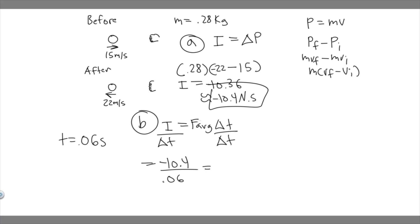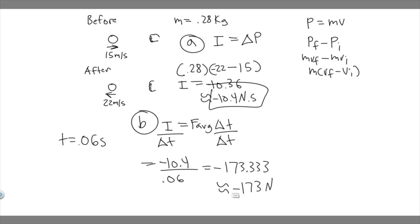Plugging in 10.4 divided by 0.06, we get −173.333 and so on, which we can round to −173. The units are Newtons because it's a force. But keep in mind they're asking for the magnitude, so we take the absolute value and remove the minus sign. The answer is 173 Newtons — that's the magnitude of the average force.